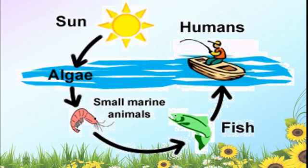Here, the algae present in still water get sunlight and prepare their own food. In the river, the small marine animals feed on algae. The small fishes feed on marine animals like prawns. And human beings feed on the fish — fish is the food for humans. Like this, so many food chains we can see in nature.